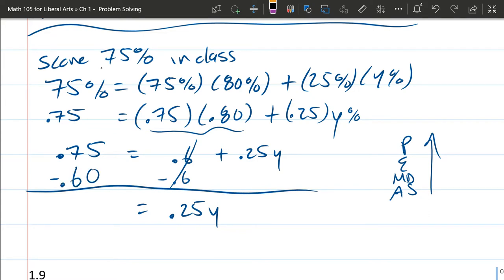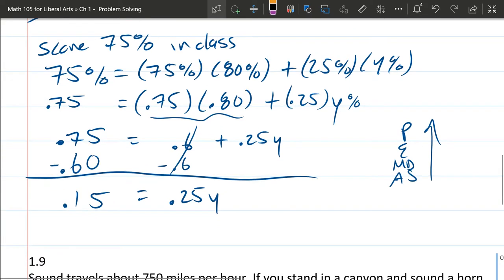We're almost there. All we have to do is get the 0.25 out of here. So we're going to divide by 0.25, both sides. And that is 0.15 divided by 0.25, which equals 0.6.